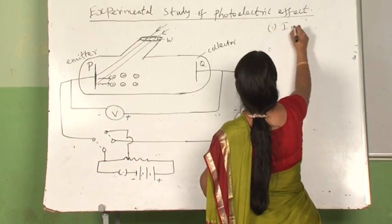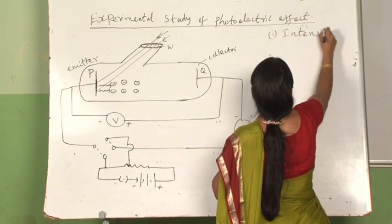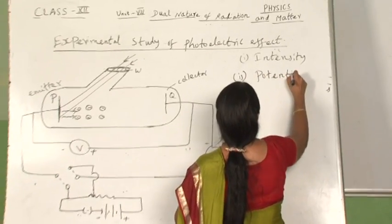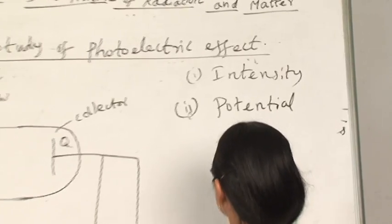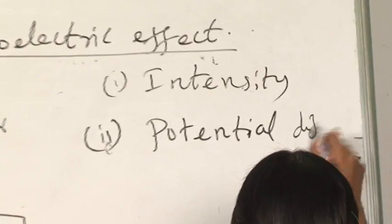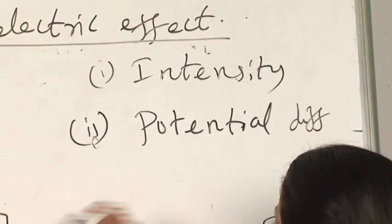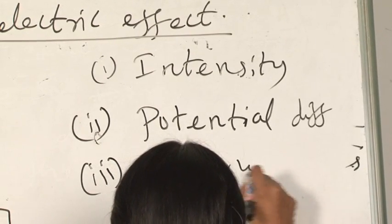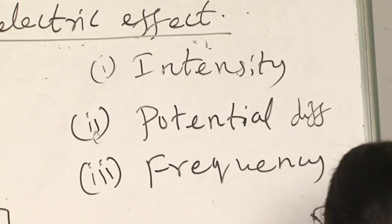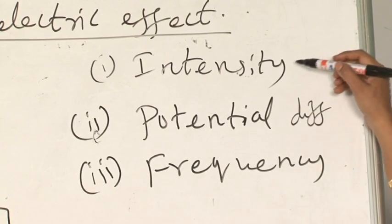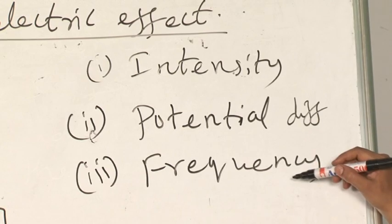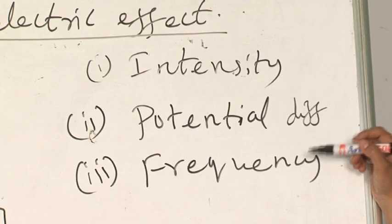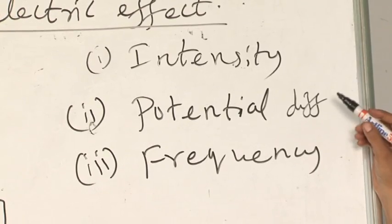Using this setup, three factors affecting photoelectric effect were studied. The first factor is intensity of incident radiation. The second is the potential difference applied across plates P and Q. The third factor is frequency. We will study the effect of one of these factors at a time.